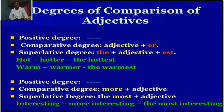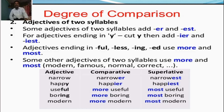Another model: Positive degree — the adjective base form. Comparative degree — more plus adjective. Superlative degree — the most plus adjective. For example: Interesting — more interesting — the most interesting.